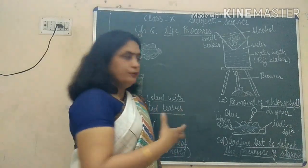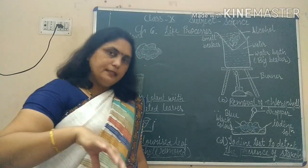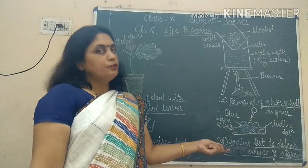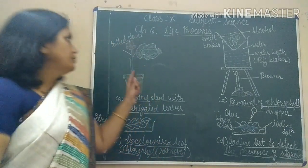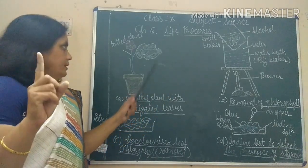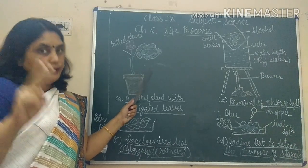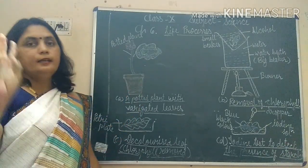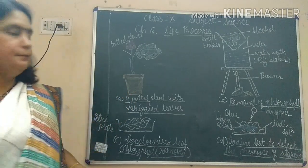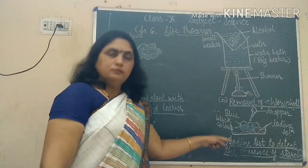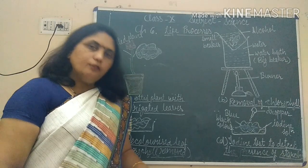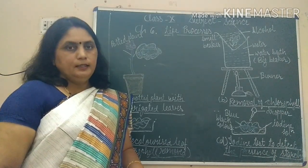We observe that only the parts of the leaf which had chlorophyll have become blue-black in color; the rest of the parts show no change. This starch test shows that photosynthesis took place only in the parts with chlorophyll - glucose was formed and extra glucose was stored as starch. The parts without chlorophyll show no starch even though they were getting sunlight, carbon dioxide, and water.